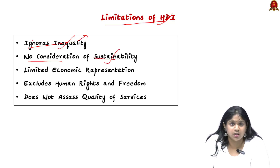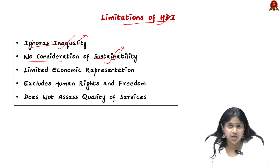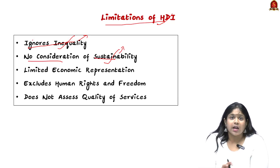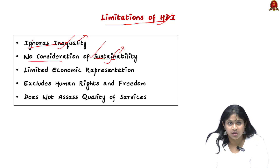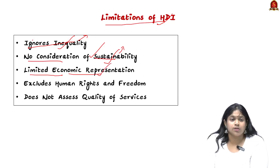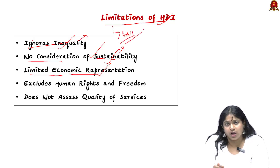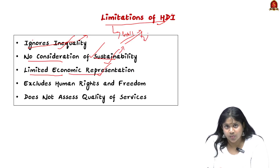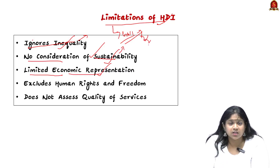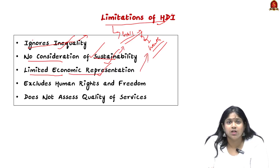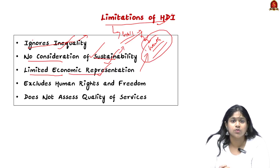Next, there is no consideration of sustainability. A main criticism of the HDI is that it does not account for environmental degradation and problems like carbon emissions. There is no focus on sustainable development. Additionally, it has limited economic representation — the HDI uses GNI (Gross National Income), which is the average income per resident, but does not consider the total wealth or assets of the nation, resulting in a narrow economic representation.